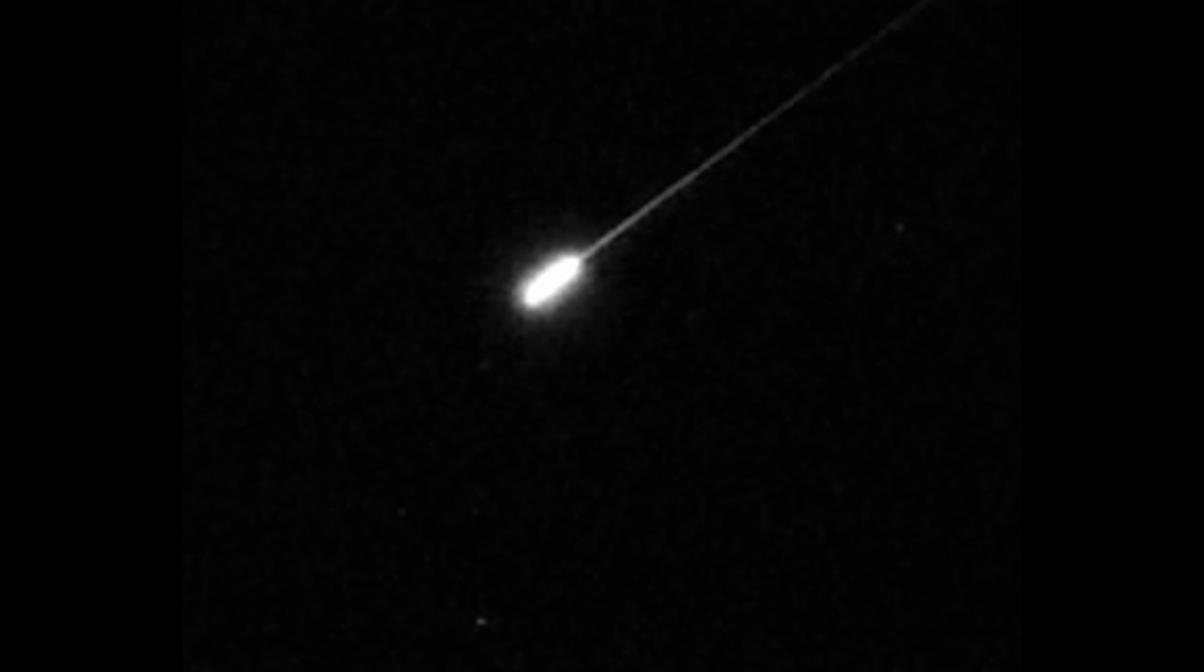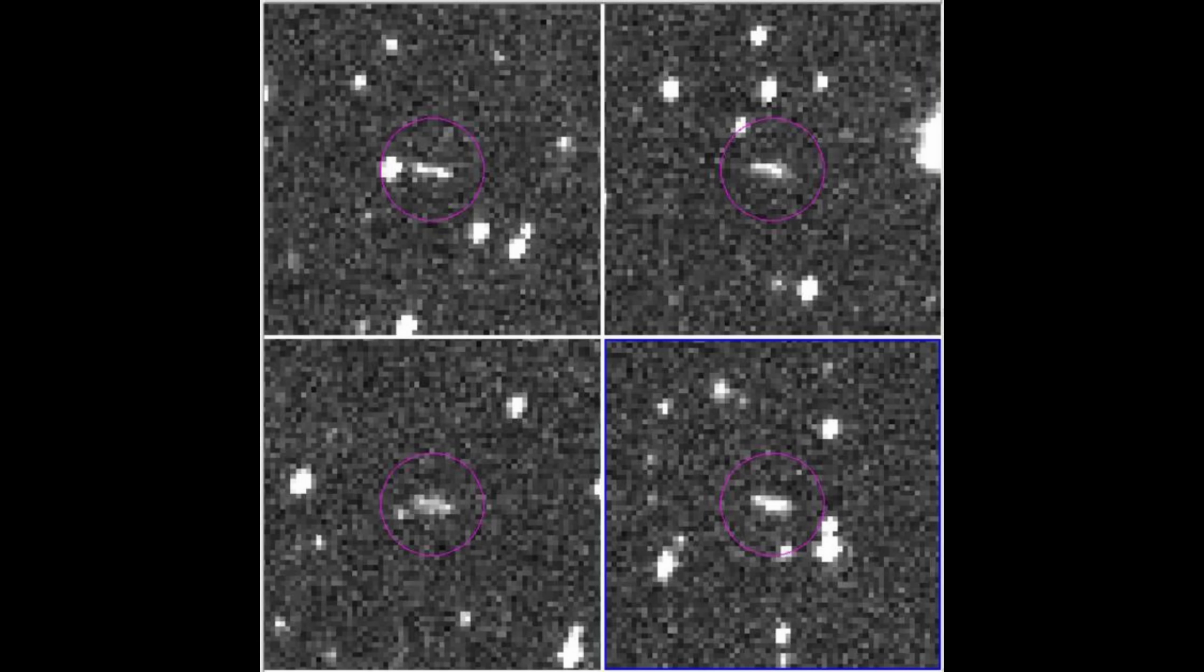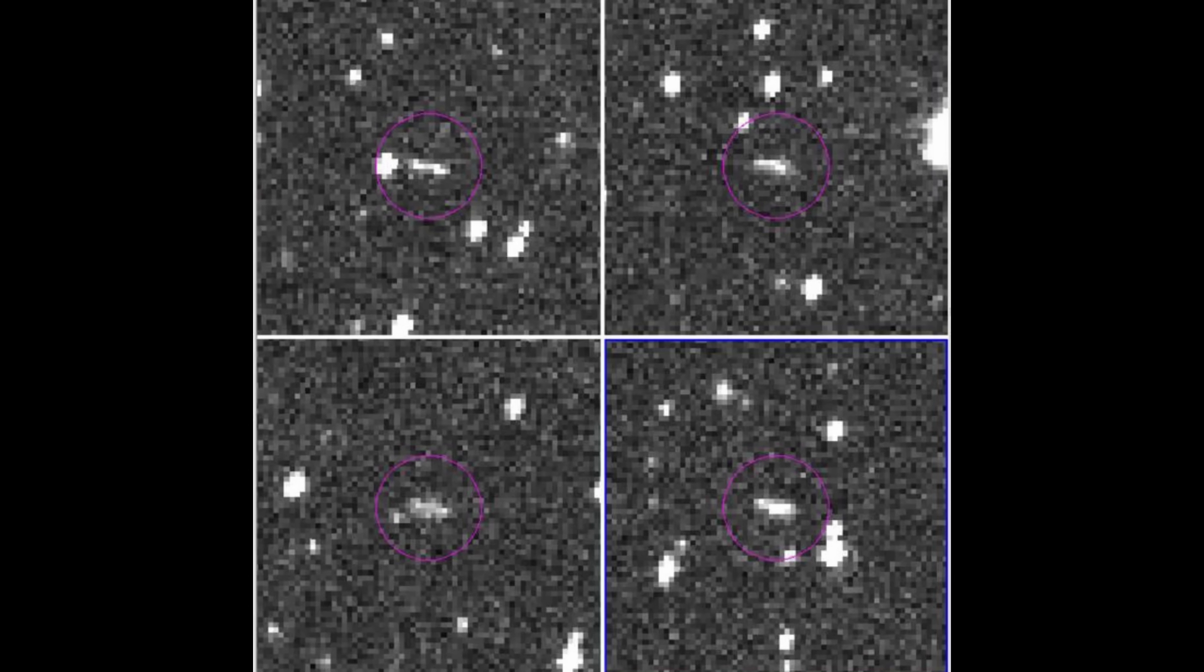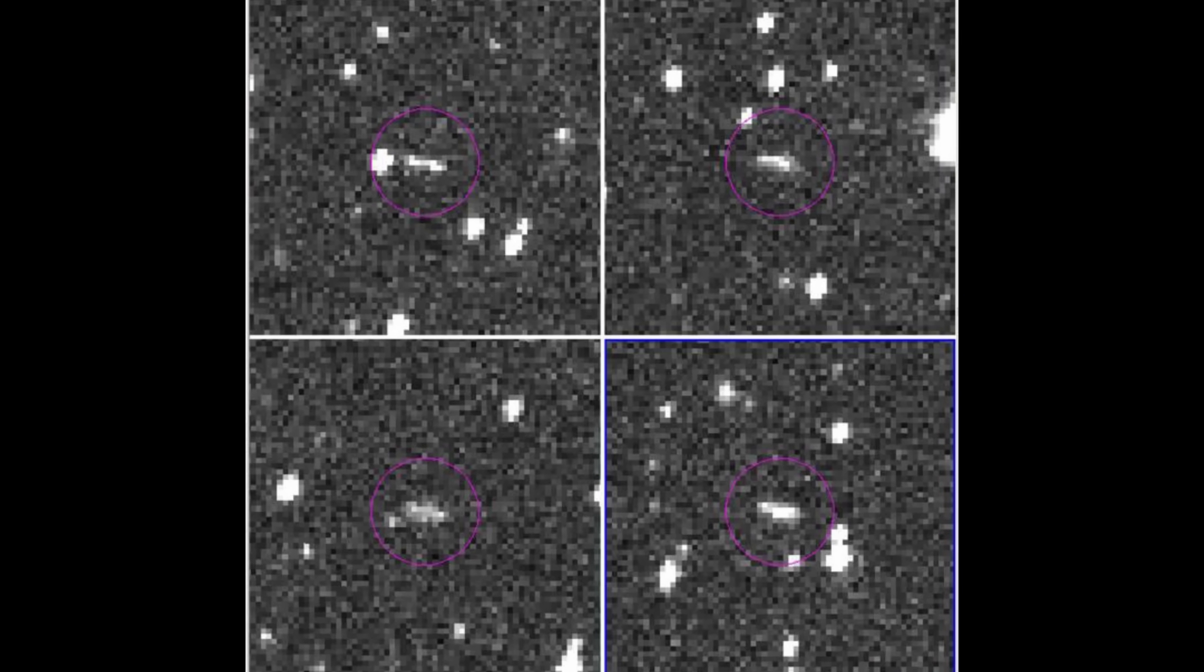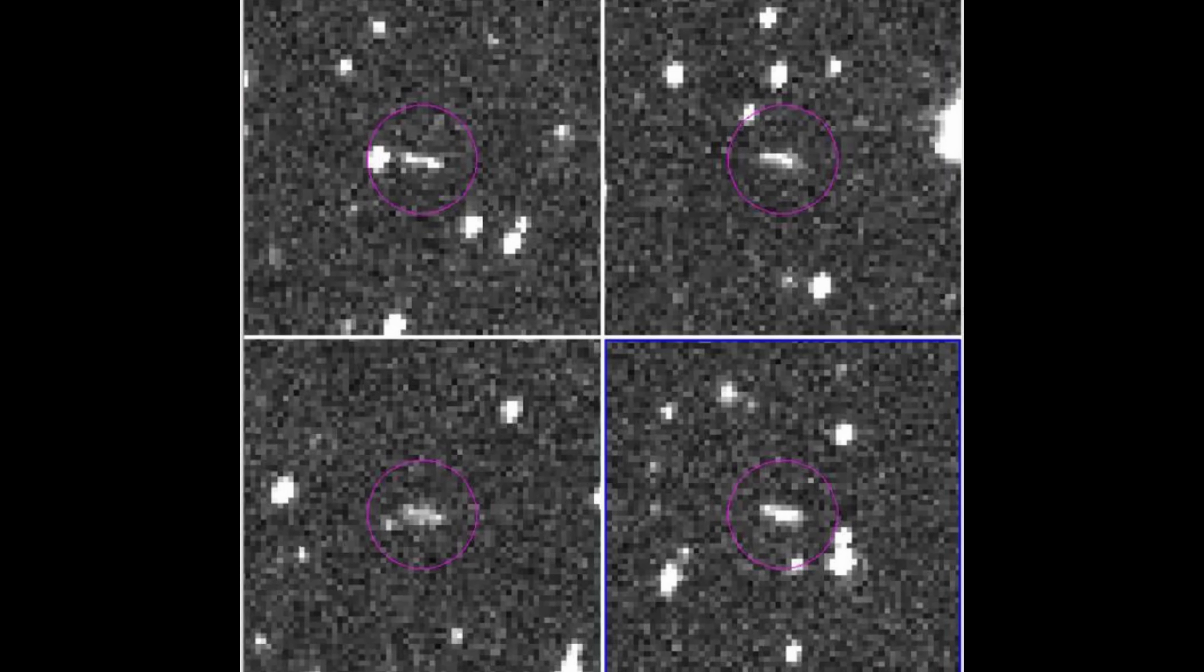What if the goal isn't to impact Earth, but to enter a stable orbit, to park a Manhattan-sized object in our sky, a permanent silent moon that would shatter our society, our religions, and our very sense of place in the universe?